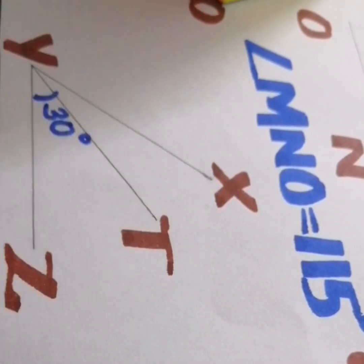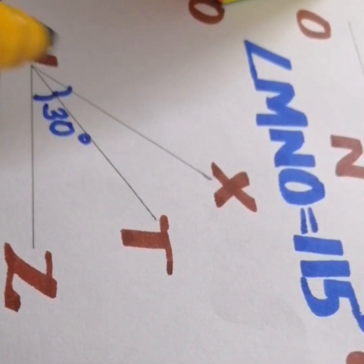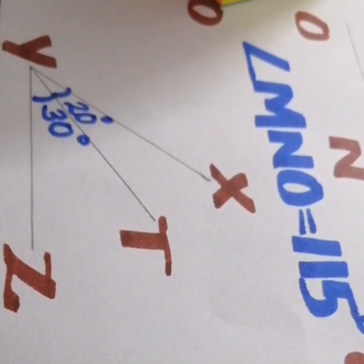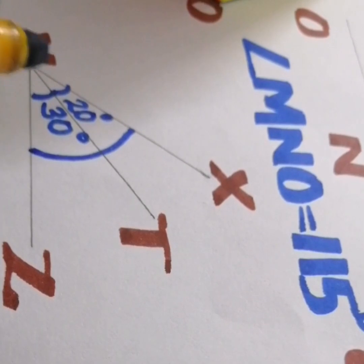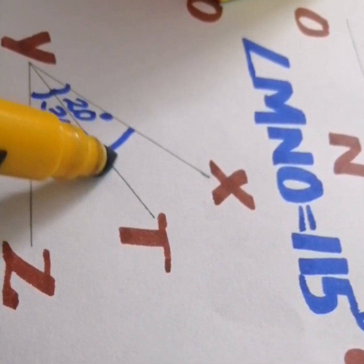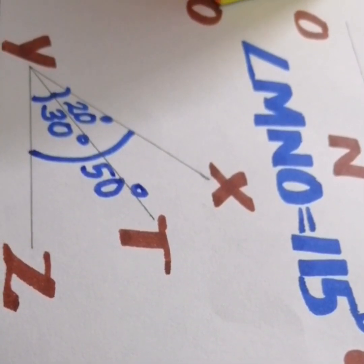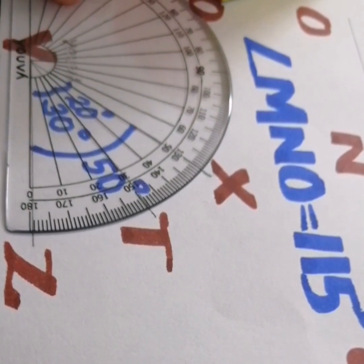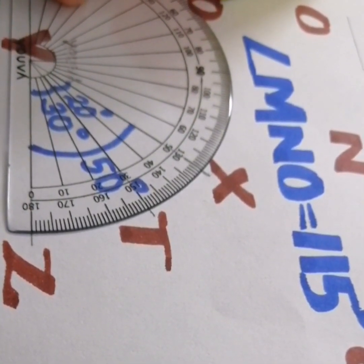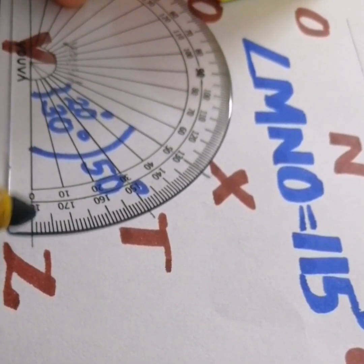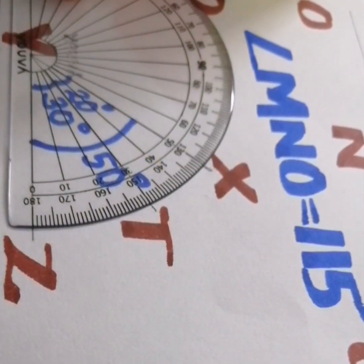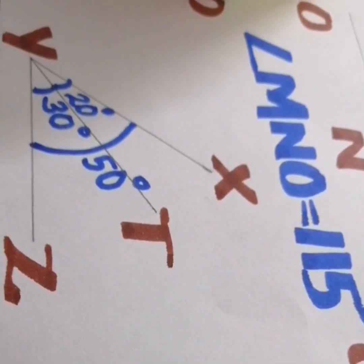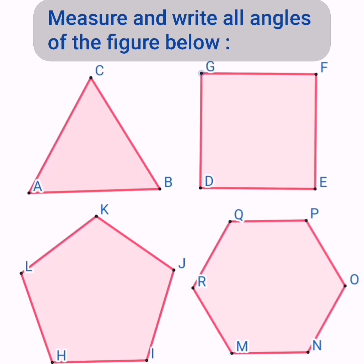The large angle XYZ is 20 plus 30 equals 50 degrees. Let's verify — taking measurement from zero: 0, 10, 20, 30, 40, 50. The angle XYZ is confirmed to be 50 degrees.